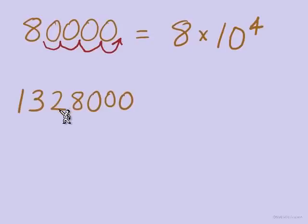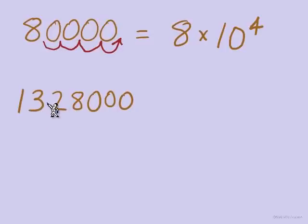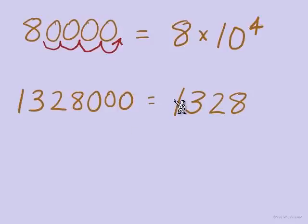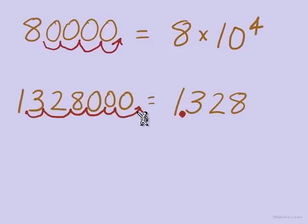Now let's try 1,328,000. A quick reminder: commas are placed every three digits starting from the right. For scientific notation, we bring over all the non-zero digits: 1, 3, 2, and 8. The decimal point belongs right behind the first digit, giving us 1.328. With the point right behind the 1, we need to move 1, 2, 3, 4, 5, 6 places — so 1.328 times 10 to the 6th.